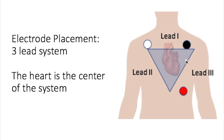You'll notice this triangle — this is Einthoven's triangle, referencing the history of ECGs. He was able to identify that this three lead placement will actually give us many views of the heart. Particularly we're going to be looking at lead two, and we'll come back to this paperwork and the leads in a few minutes.